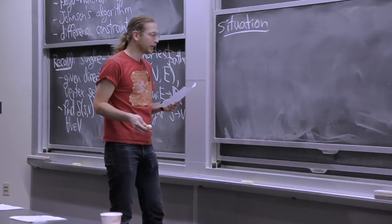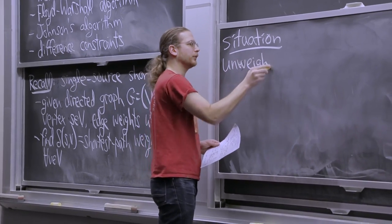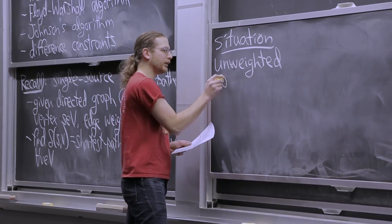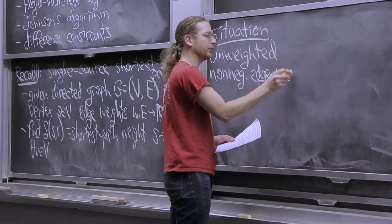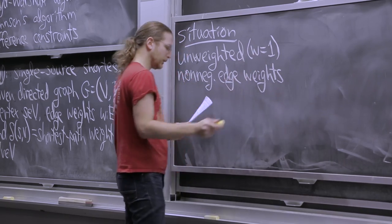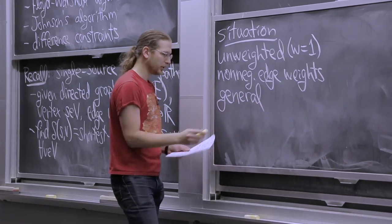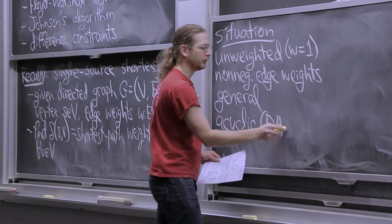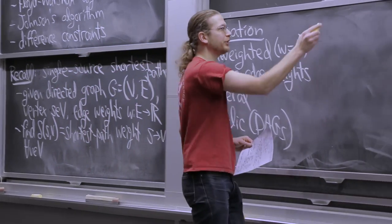So at least from a theory standpoint, we don't know how to beat Dijkstra's algorithm and Bellman-Ford's algorithm for the A to B problem. You get a little bit more than what you asked for, sort of for the same price. Let me remind you, in a few different scenarios, what algorithms we have and how long they take. The scenarios of interest are the unweighted case, a non-negative weighted case, the general case with arbitrary weights, and DAGs — acyclic graphs.